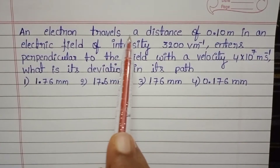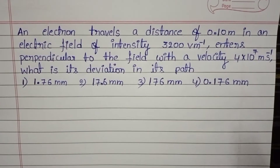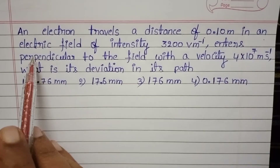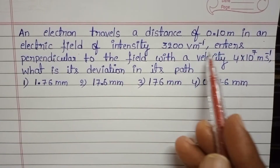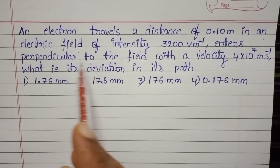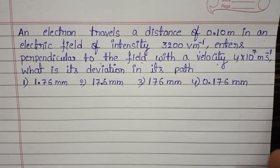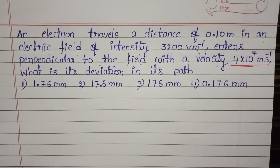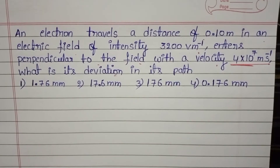An electron travels a distance of 0.10 meter in an electric field of intensity 3200 volt per meter. It enters perpendicular to the field with a velocity of 4 into 10 to the power 7 meter per second. What is its deviation in its path?